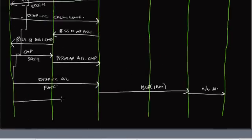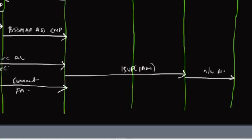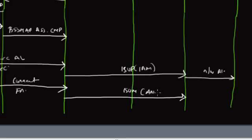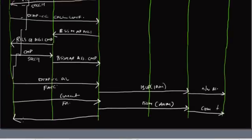The mobile sends a DTAP Call Control Connect message on the fast associated channel, indicating it is ready to answer the call. Once the MSC VLR receives this, it sends an ISUP Answer Message to the gateway MSC. The gateway MSC sends a connect message to the PSTN. At this point the connection is established, and the MSC VLR sends a Connect Acknowledgement back to the mobile MS, confirming the voice path has been established.